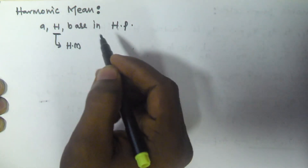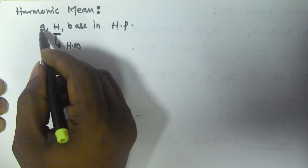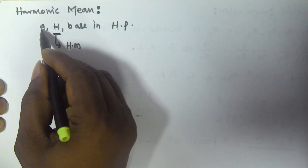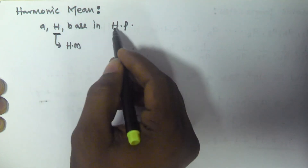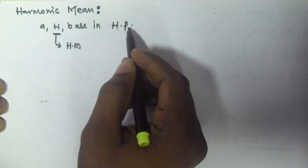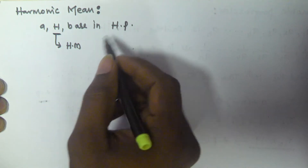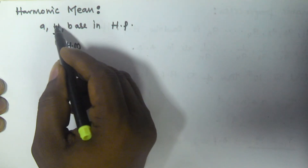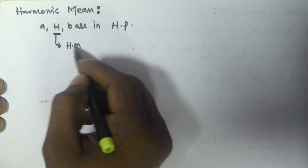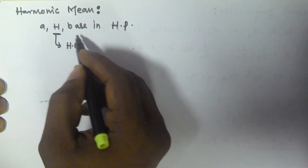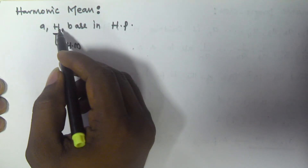So when the given three numbers a, h, b are in harmonic progression, the middle number or middle term h is called the harmonic mean of the other two numbers a, b.